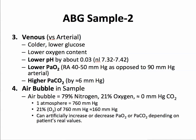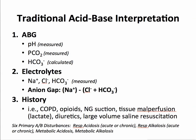A bubble can have an effect depending on what the patient's baseline PaO2 is, and it can change CO2 also. In the traditional acid-base interpretation, we get an arterial blood gas specimen and the pH and PCO2 are measured in the machine, while bicarbonate is calculated. We then look at the electrolytes — sodium, chloride, and bicarbonate — which are also measured from the electrolytes panel. Note that bicarbonate from the electrolytes is measured, as opposed to bicarbonate from the arterial blood gas, which is calculated.